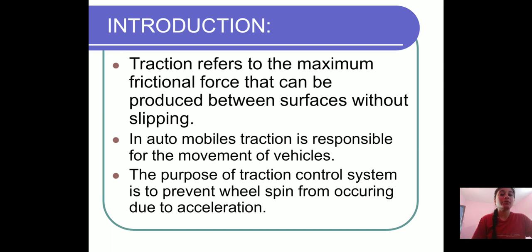Let us discuss the introduction of traction control system. What is traction? Traction refers to the maximum frictional force that can be produced between surfaces without slipping. In automobiles, traction is responsible for the movement of vehicles. When we design a wheeled or tracked vehicle, there must be high traction between the wheel and the ground, which is more desirable than low traction because it allows more energetic acceleration without wheel slippage. The purpose of traction control system is to prevent wheel spin from occurring due to acceleration.